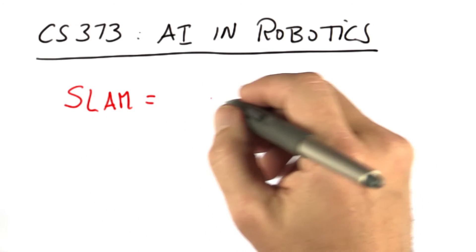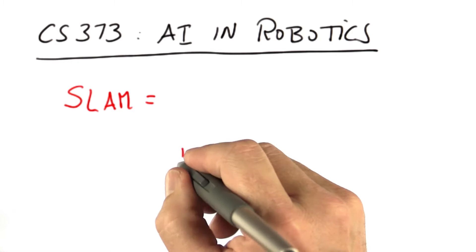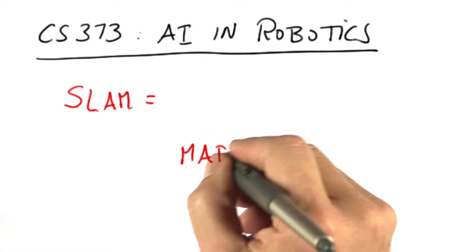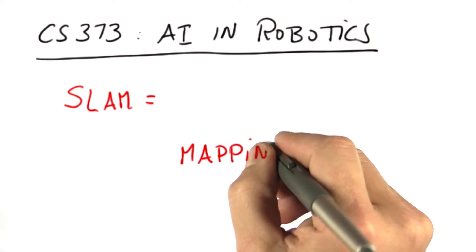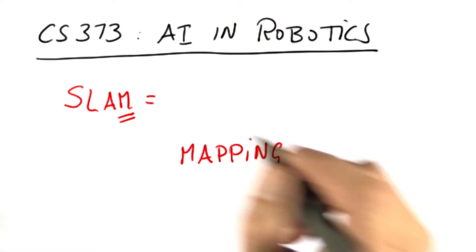So SLAM is a method for mapping. It's short for simultaneous localization and mapping. And some of this might show up in the final exam, so do pay attention.